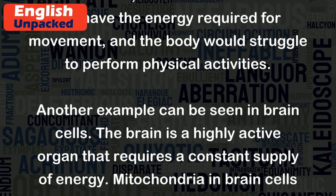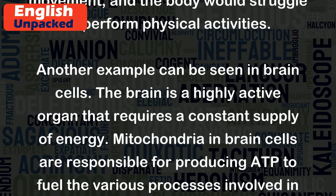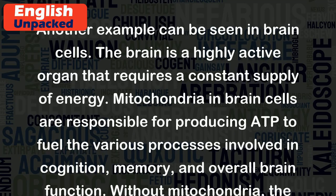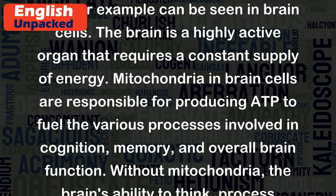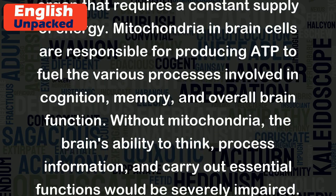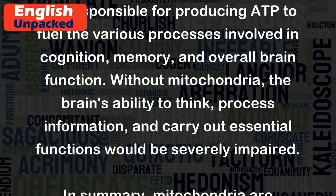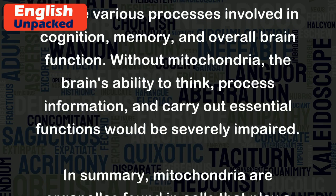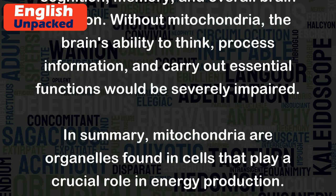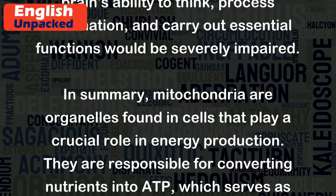Another example can be seen in brain cells. The brain is a highly active organ that requires a constant supply of energy. Mitochondria in brain cells are responsible for producing ATP to fuel the various processes involved in cognition, memory, and overall brain function. Without mitochondria, the brain's ability to think, process information, and carry out essential functions would be severely impaired.